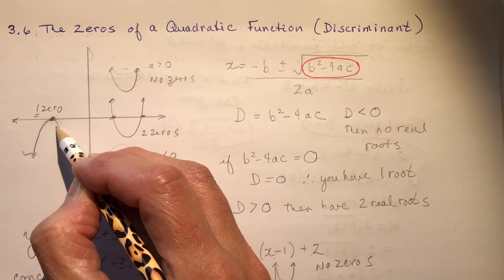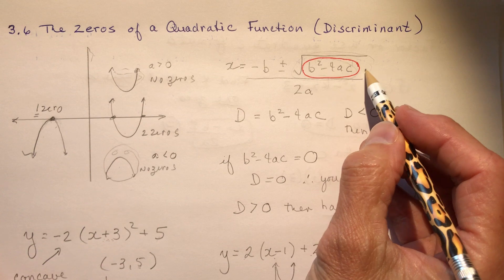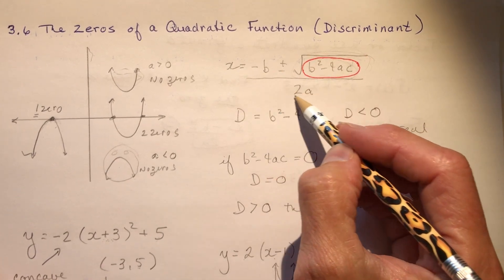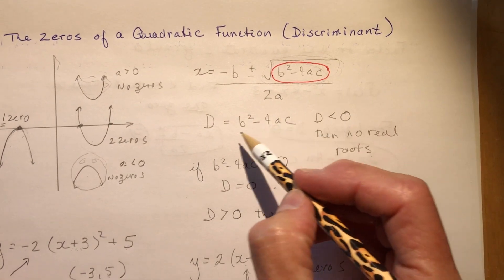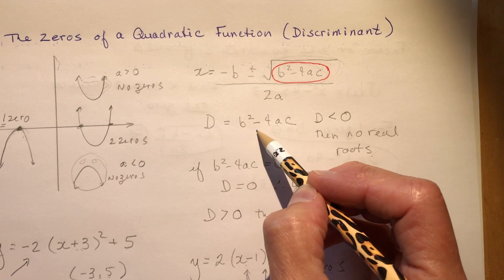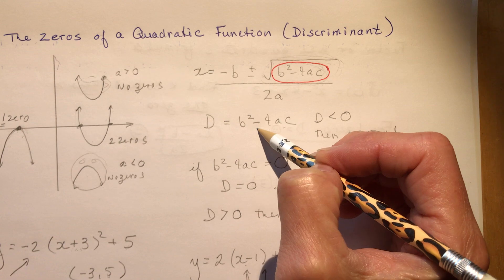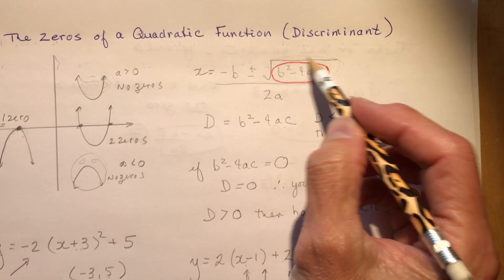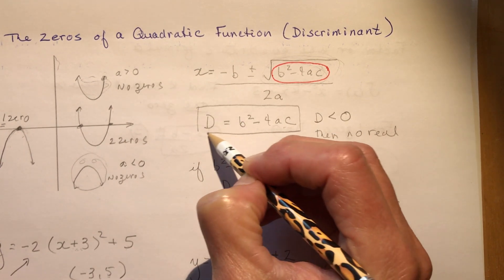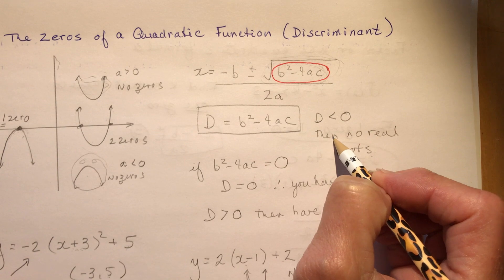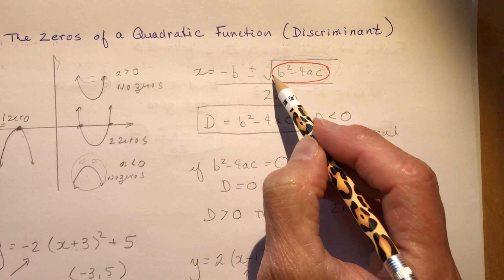The discriminant, which you learned in grade 10, is found underneath the radical sign in the quadratic formula. When you talk about the discriminant, you do not use the radical sign — it is simply D = b² − 4ac. That's all the discriminant is. If the discriminant is less than zero, you will have no real roots.